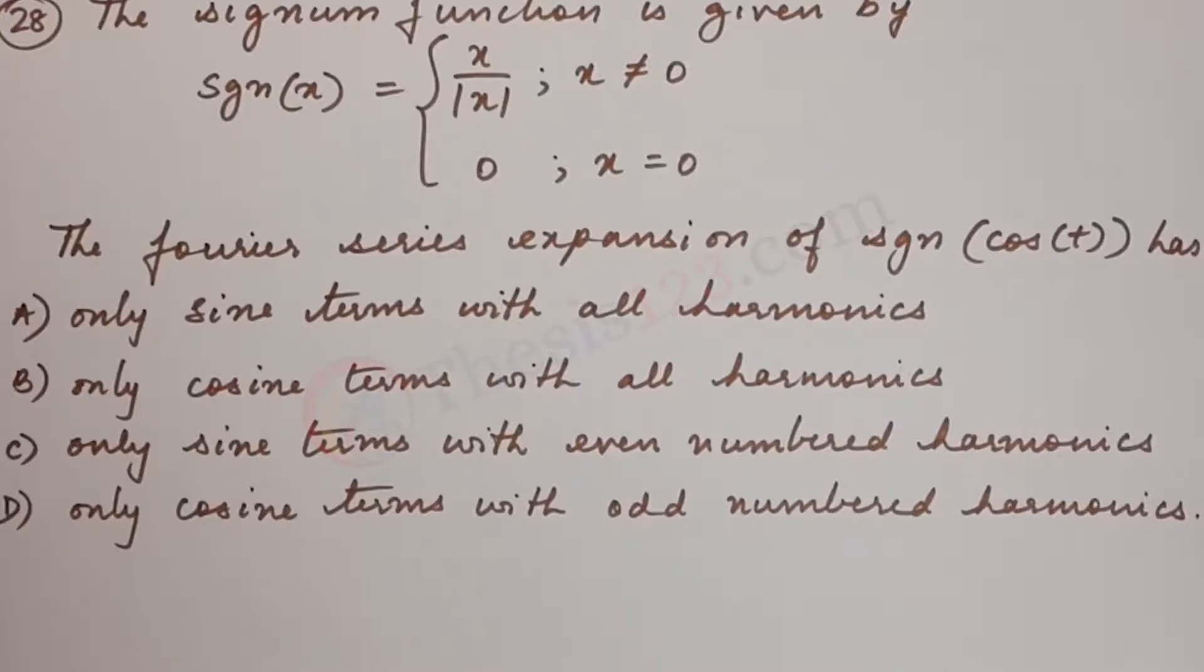The Fourier series expansion of signum of cos t has: a) only sine terms with all harmonics, b) only cosine terms with all harmonics, c) only sine terms with even numbered harmonics, and d) only cosine terms with odd numbered harmonics.